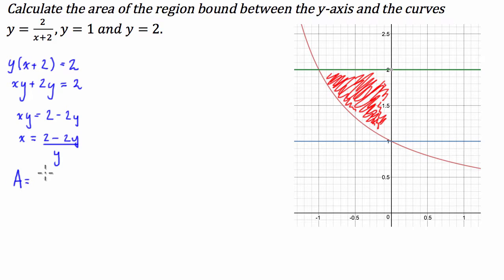is going to be equal to the integral from 1 to 2 of the function we've just found, 2 minus 2y over y dy, with respect to y.